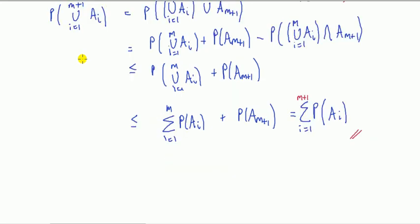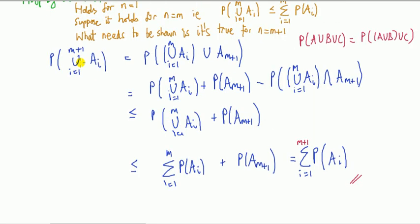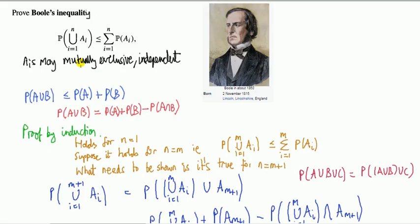Notice in this proof we did not use anything - we didn't state anything that A had to be independent or mutually exclusive. Okay, I think seeing one proof of this is enough at this stage.